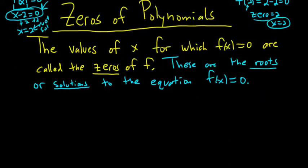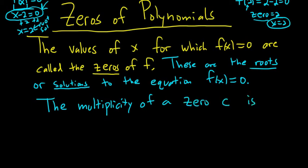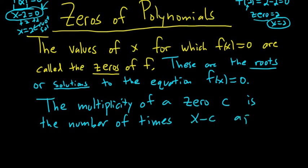So what we're interested in is what's called the multiplicity of the zeros. The multiplicity of a zero c is the number of times x minus c appears in the factorization of f. Let me show you what this is. This is actually really easy as well.